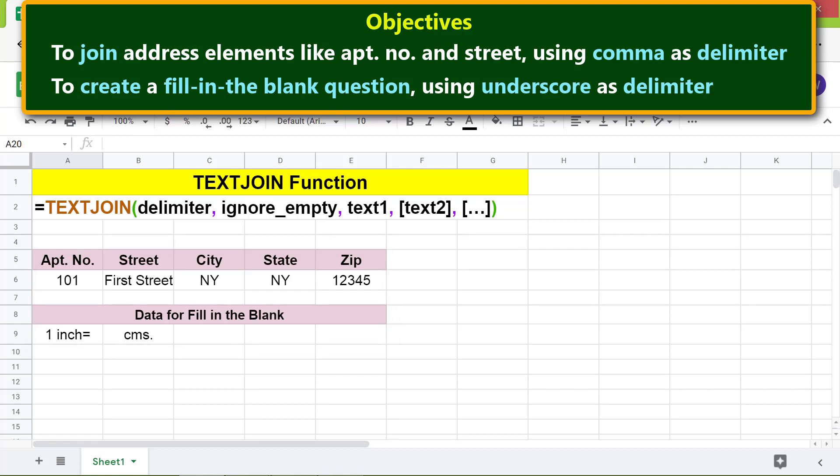Let's type the TEXTJOIN function formula. First, type equals TEXTJOIN. For delimiter, type comma between quotes, then type comma. For ignore empty, type true, then type comma.